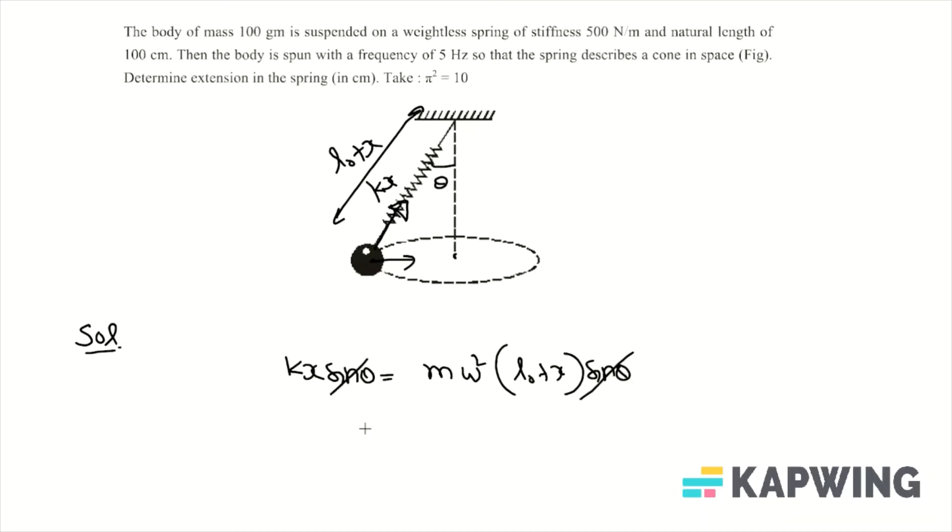The value of k is 500 and mass is 0.1. Omega is 2πf, so omega squared is 4π²f², which is 4π² times 25, into l₀ is 1 meter plus x.